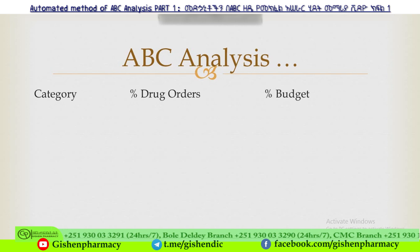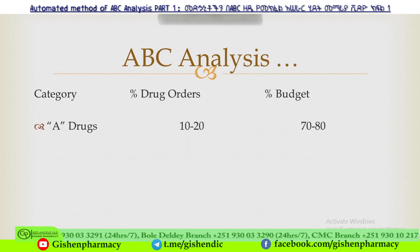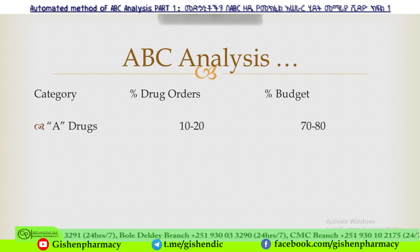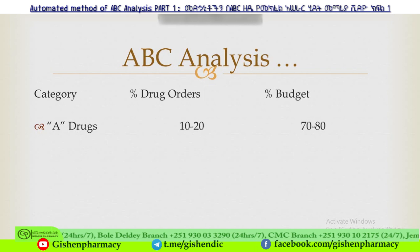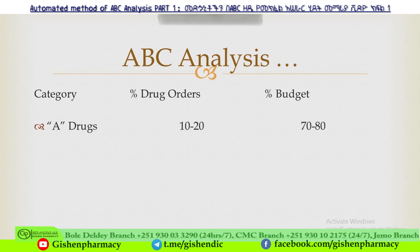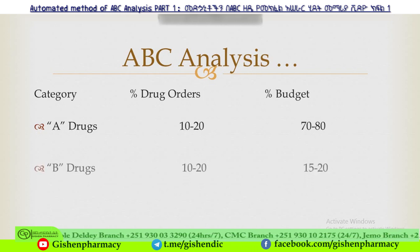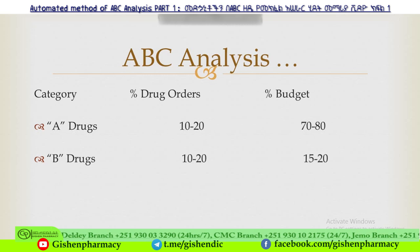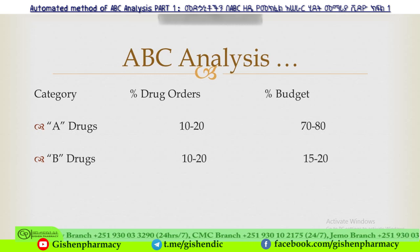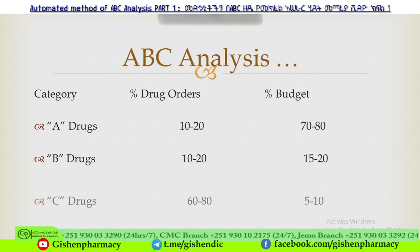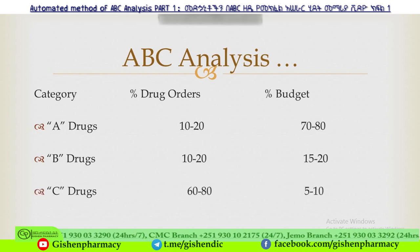Category classification: Class A drugs use 10-20% of the drug orders but consume 70-80% of the budget. Class B drugs represent 10-20% of drug orders with a moderate share of the budget.